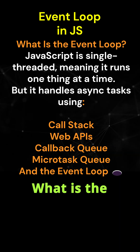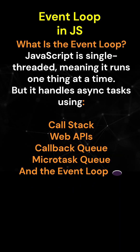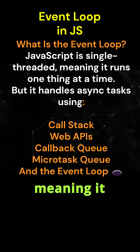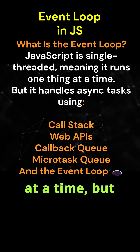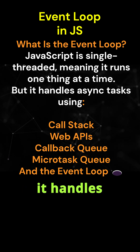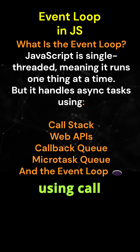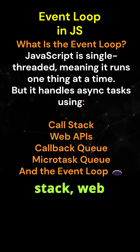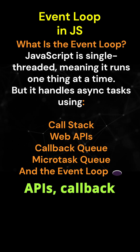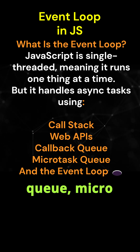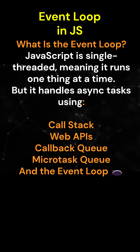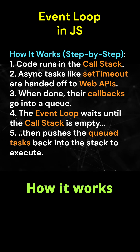What is the event loop? JavaScript is single-threaded, meaning it runs one thing at a time. But it handles async tasks using the Call Stack, Web APIs, Callback Queue, Microtask Queue, and the Event Loop.